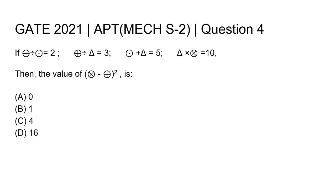Hello everyone. This is a question from GATE 2021 mechanical engineering, type 2. In the question, 4 equations are given and we have to solve them to find the value of another equation. In the equations you can see there are some symbols — no need to be afraid of these symbols, you can just take them as variables like x, y, z.